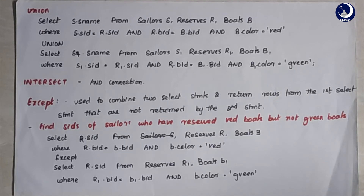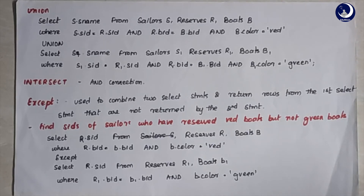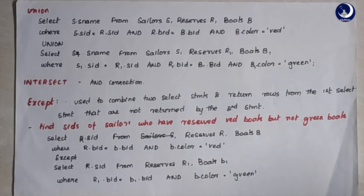If you want sailors who reserved both a red boat and a green boat, you use INTERSECT - similar to the intersection operation in set mathematics. The query syntax is the same as the union query; the only thing that changes is replacing the UNION keyword with the INTERSECT keyword. This gives you details of sailors who reserved both a red and a green boat.